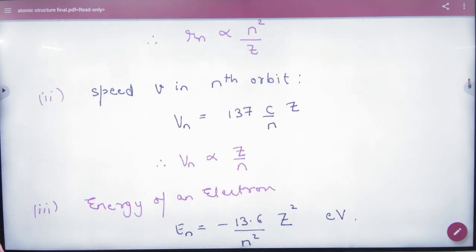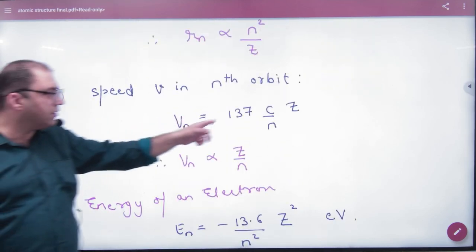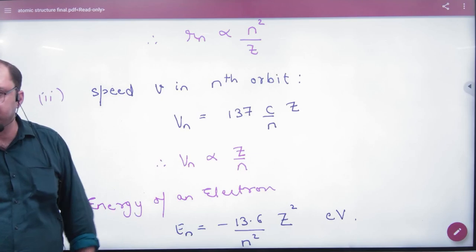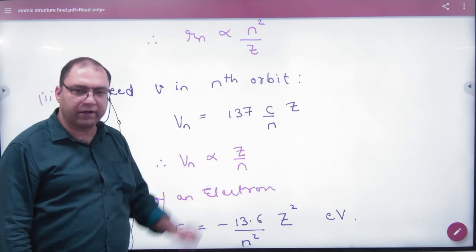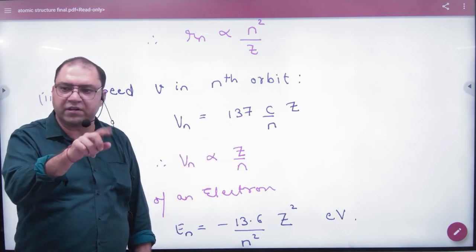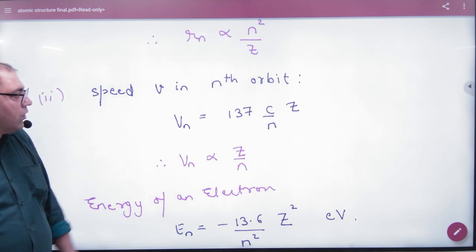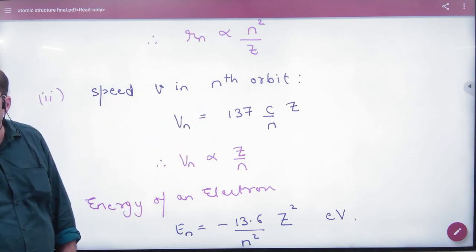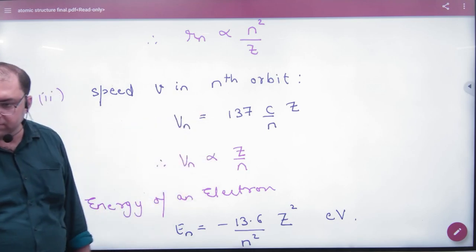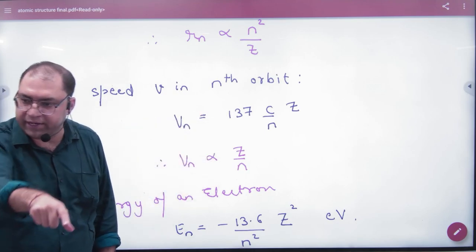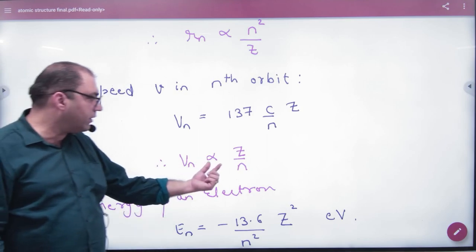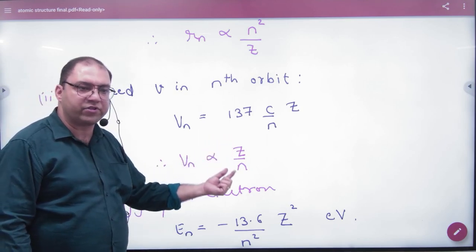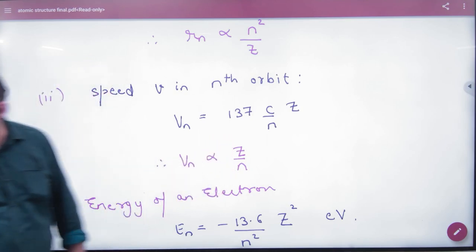Next result is velocity. You learned the speed as C by 137N. In this formula for hydrogen-like atoms, what do you have to do with Z? Multiply. So remember, velocity is proportional to Z by N. This is the second result.